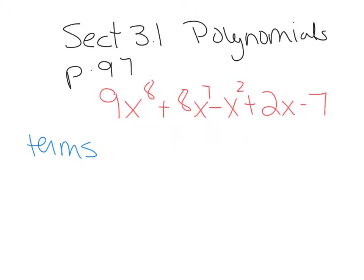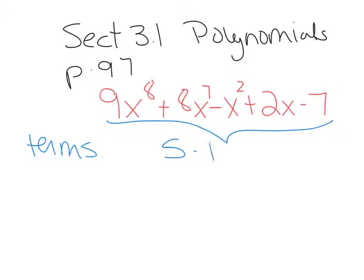If you make vertical lines every place you see a plus and minus sign, you will be separating the terms. This polynomial has 1, 2, 3, 4, 5 terms. So we're going to say this is 5 terms, based on separating the terms with plus and minus signs.